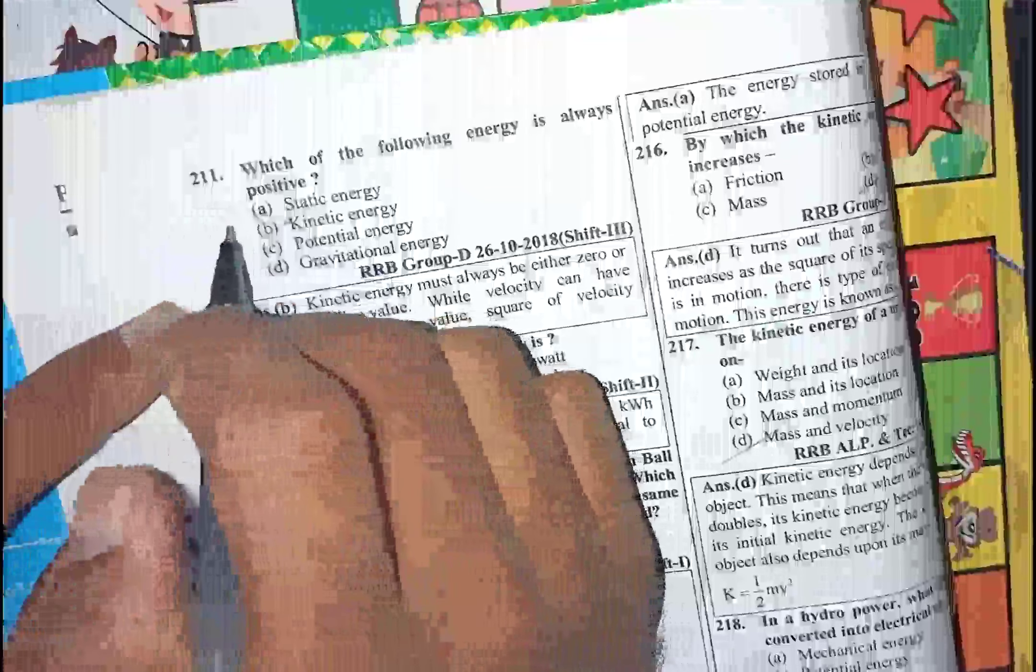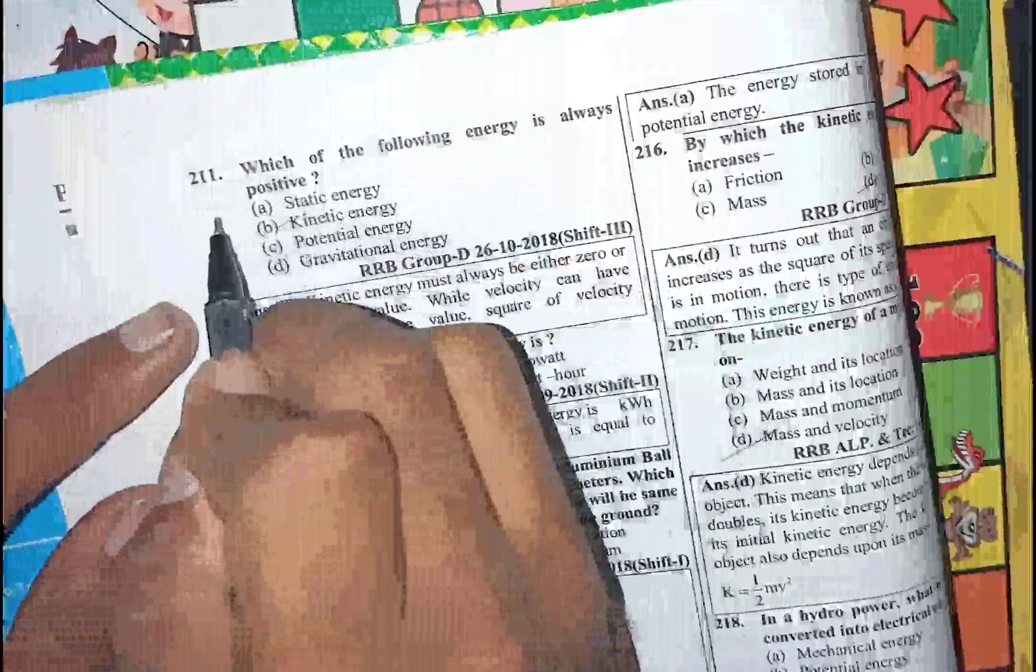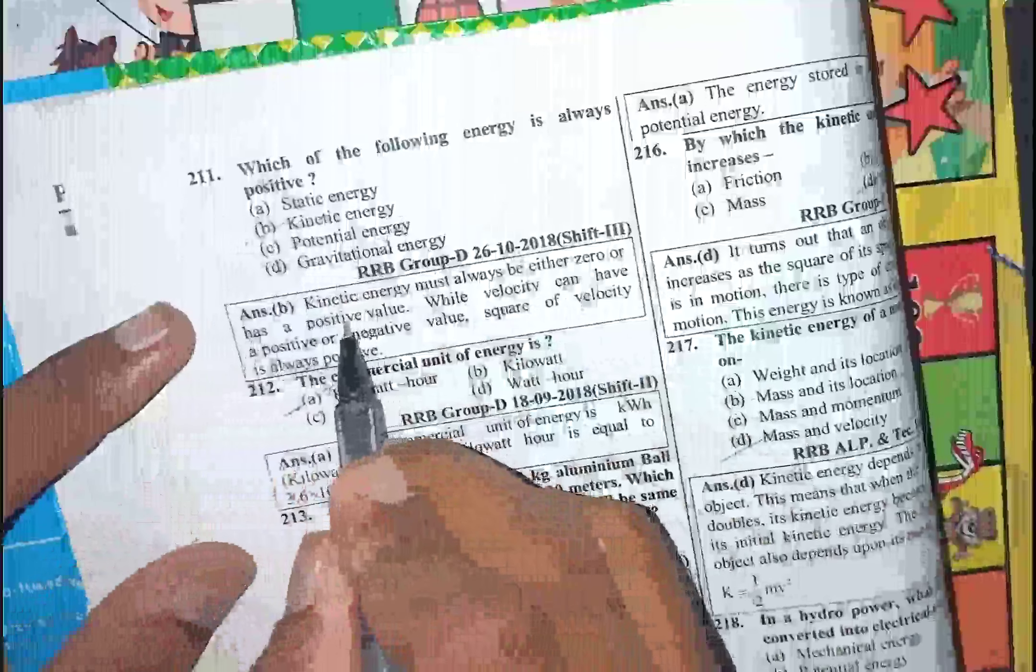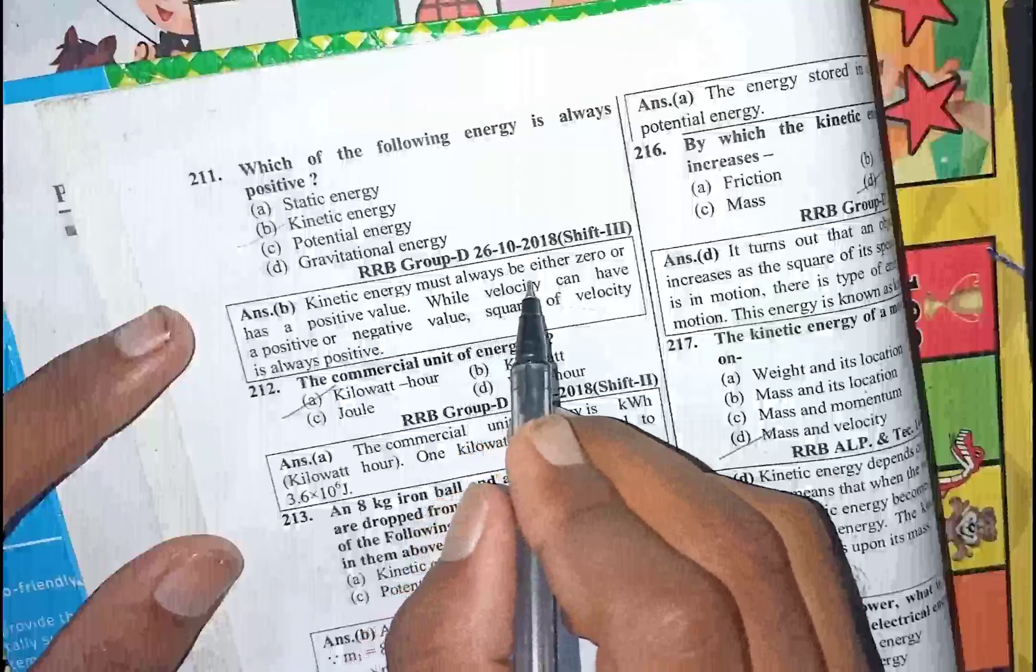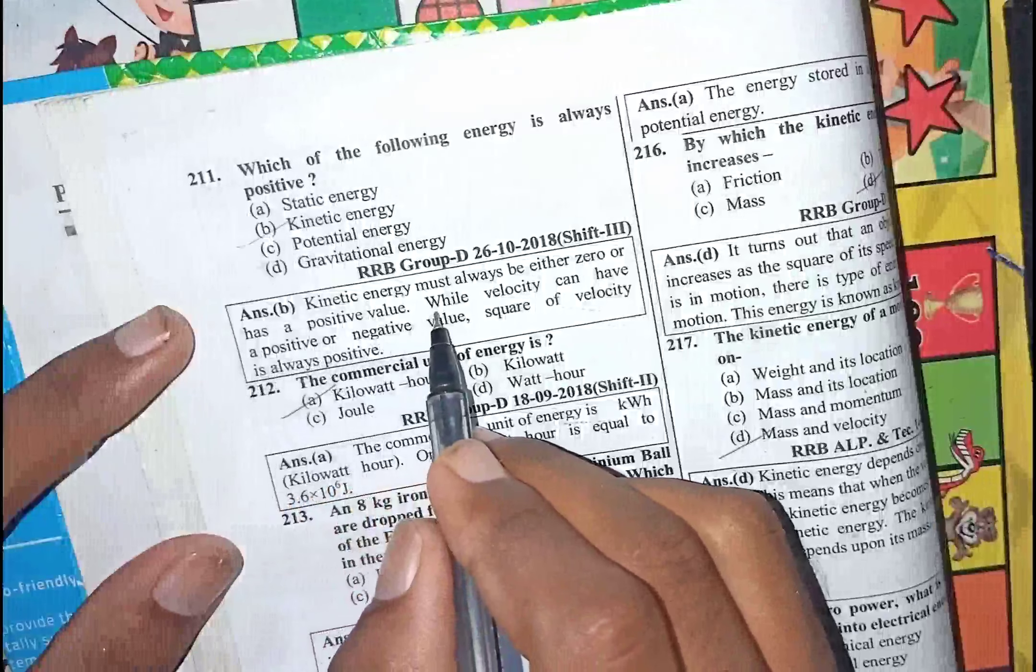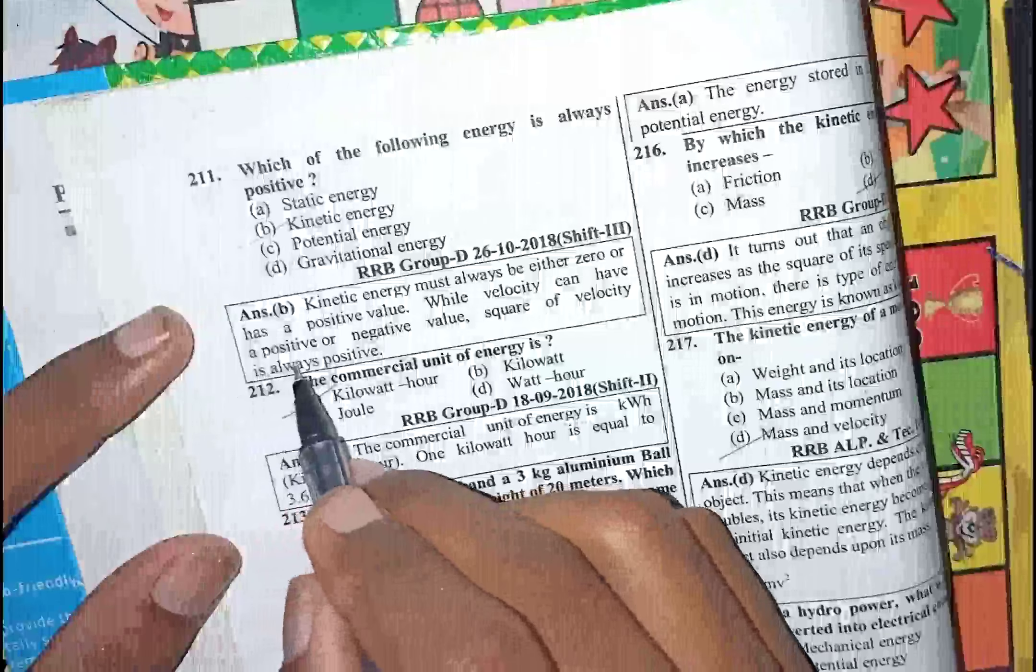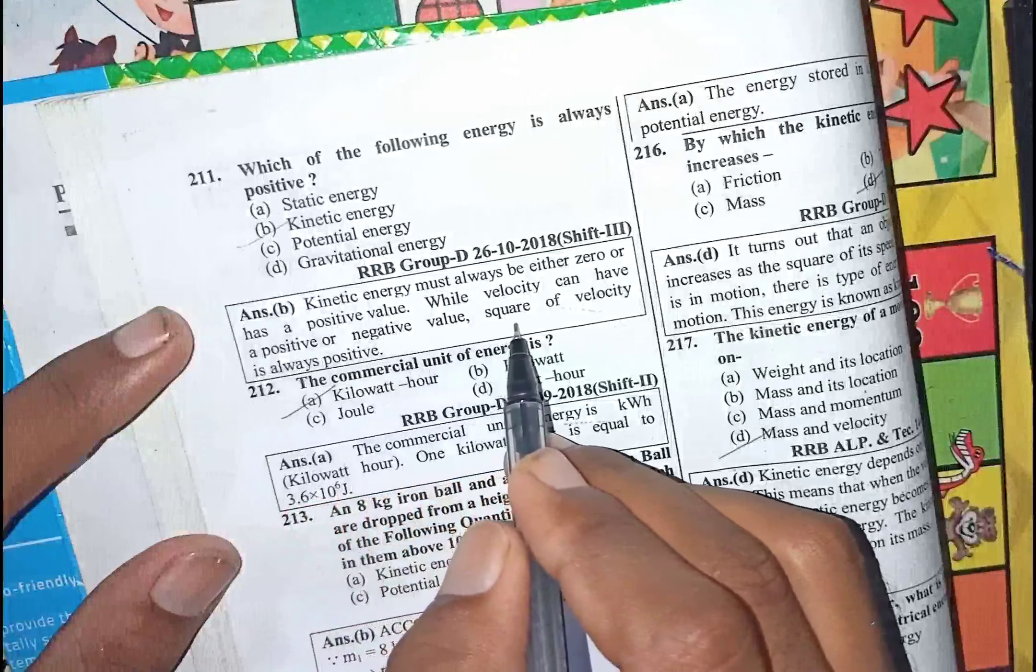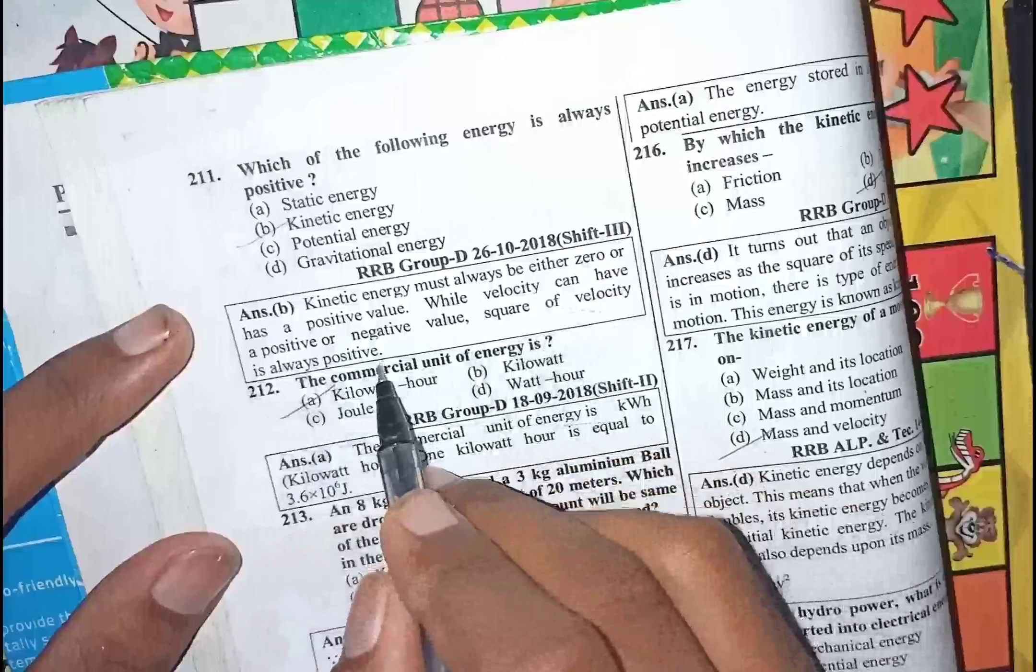I'm going to start with the following: energy is always positive. Kinetic energy must always be either zero or have a positive value. While velocity can have a positive or negative value, the squared form of velocity is always positive.